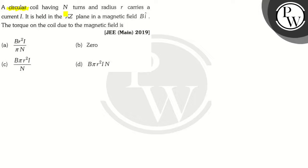A circular coil having N turns and radius R carries a current of I. It is held in the XZ plane in a magnetic field B I cap. The torque on the coil due to the magnetic field is given by which of these options?